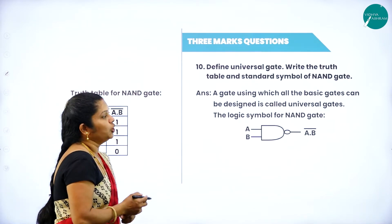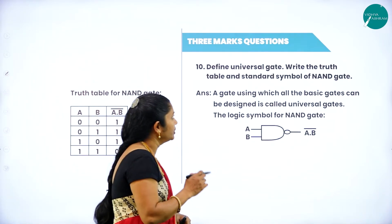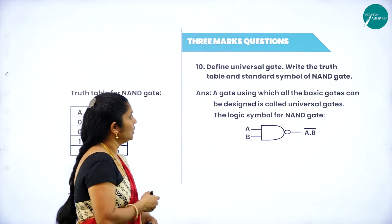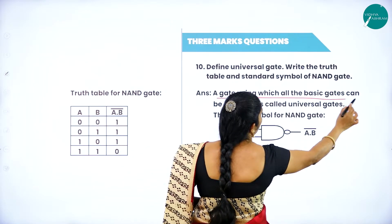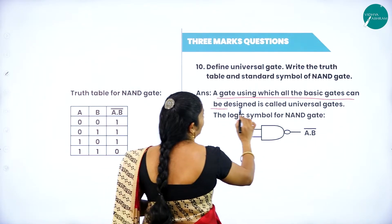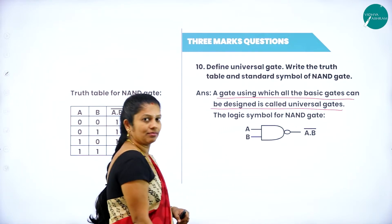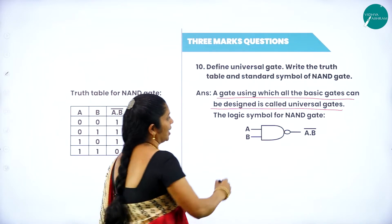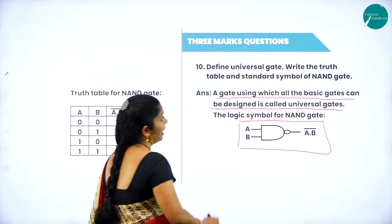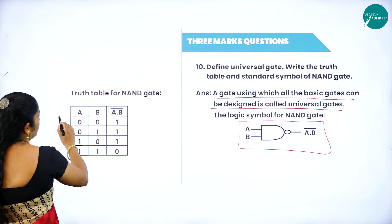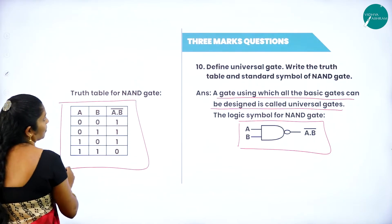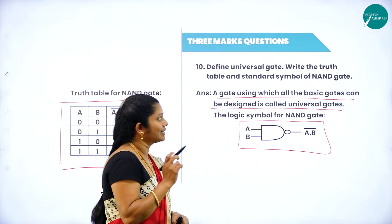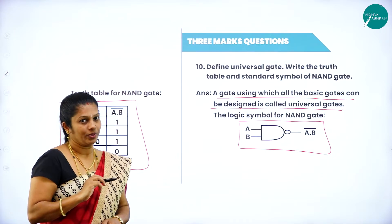Next: define universal gate and write the truth table and standard symbol of NAND gate. A gate using which all basic gates can be designed is called a universal gate. The standard symbol for NAND gate is a D-shape with a circle at the output, with minimum two inputs, and the truth table is as described for NAND gate.